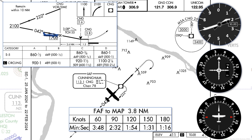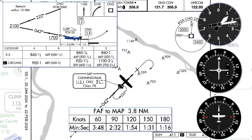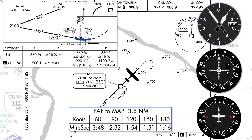We pass over the station — when the flag flips, we start down and begin timing. We level at 900 for a buffer, and when we gain visual on the runway, we proceed for a landing.